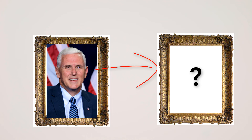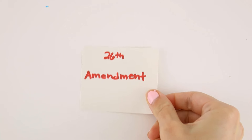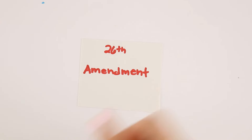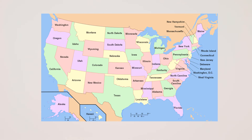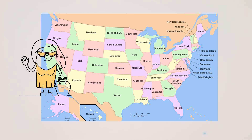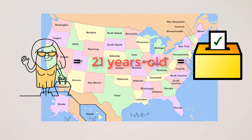The 26th Amendment set the voting age at 18. Before this amendment, most states required residents to be 21 years old to vote. However, the 26th Amendment states that any citizen 18 or older has the right to vote in federal and state elections.